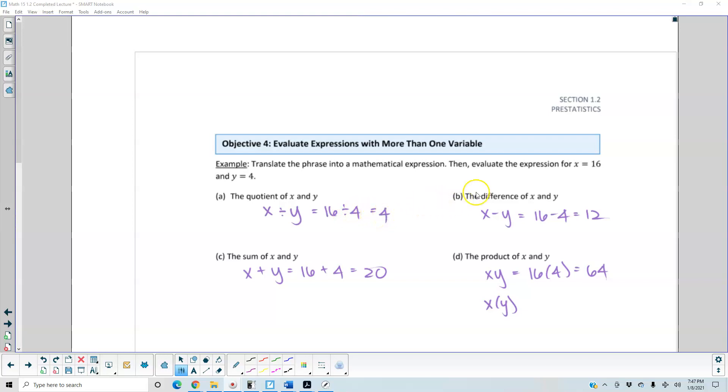For part B, the difference of x and y. When we talk about subtraction, order matters. X is listed first, so that's why it's x minus y. Plugging in x to be 16, y to be 4, 16 minus 4 is equal to 12.